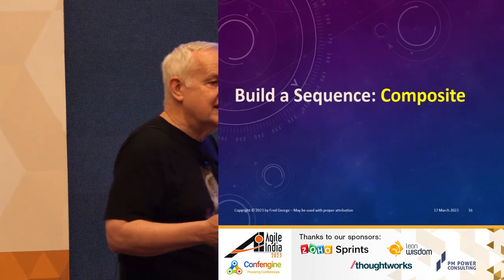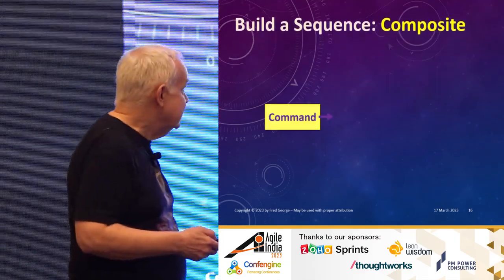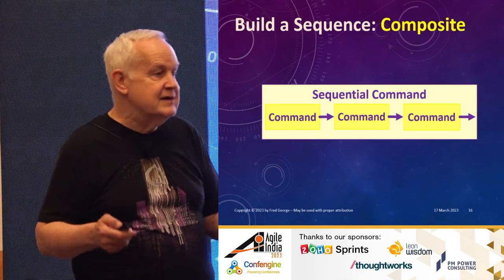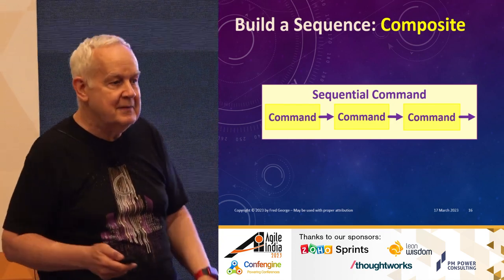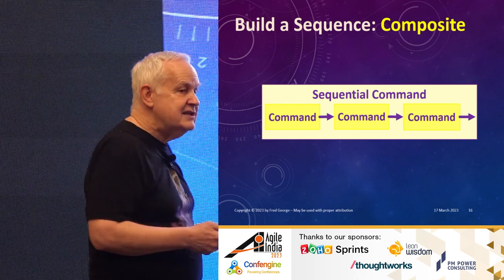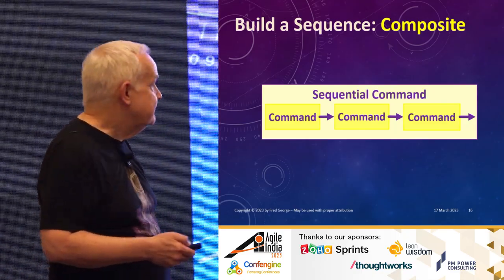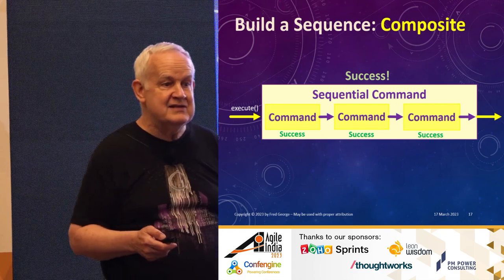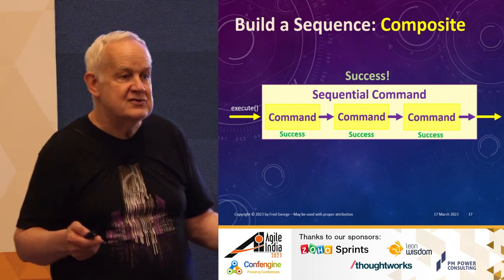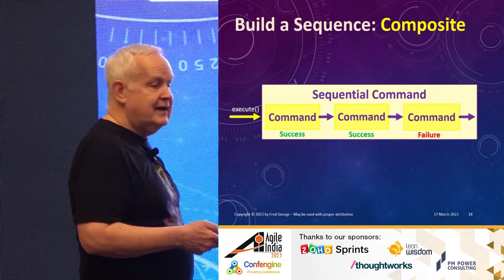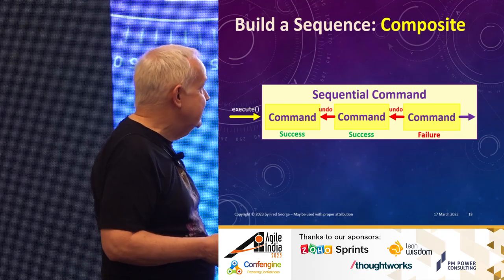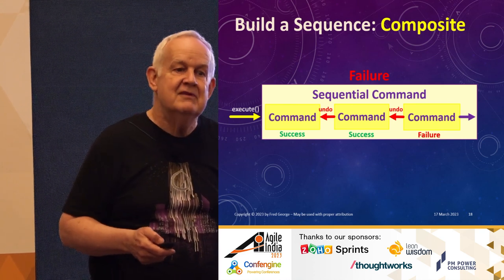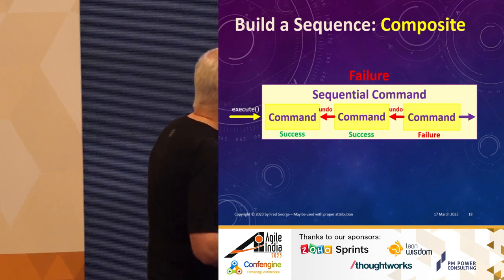You put these together and you've got a process — you have one command calling another command calling another command. You wrap a ribbon around that and call it another command, because it has the same interface as the primitive commands. That's the composite pattern — any time you have a tree structure, this is what you use. When you tell the top-level command to execute, it just goes and tells the next to execute and walks its way down. If everybody's happy, then I'm happy. If one of the steps fails, I undo the others — roll the transaction back, give the money back, open the account again.